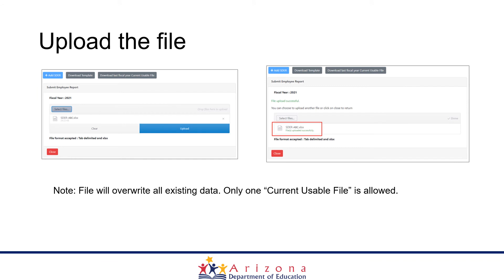Once you have exported the employee data information from your human resources software, you can validate the information on the Excel spreadsheet and then upload the file to the SDR application. Note that if you have changes to make, only one current usable file is allowed. If you upload a second file, that file will overwrite all existing data, so please make sure that the file you are uploading is the last file you would like to use as the current usable file for the TEI calculation.